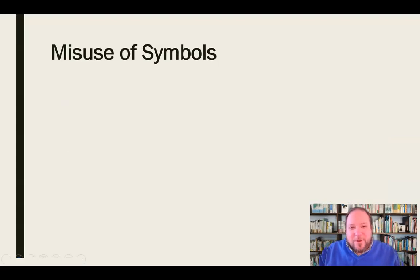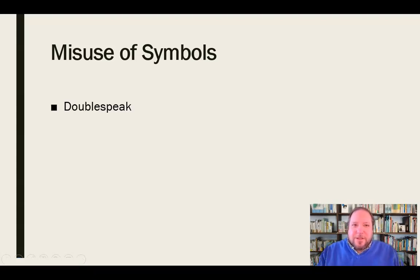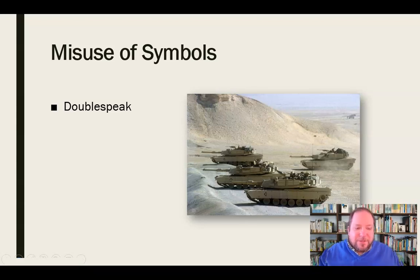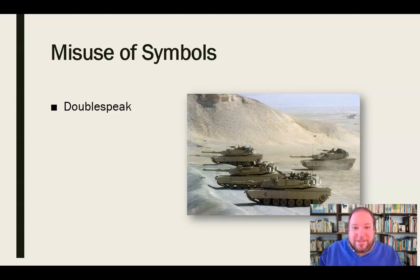We can also use symbols in not-so-great ways. We can misuse symbols in many ways, and this happens frequently. When we misuse symbols, we're using them to more manipulate than persuade. One example is doublespeak — using a term to cover the real meaning of something or to soften it, almost euphemistically. So when we see images of tanks, politicians don't want to say 'we need these war machines,' so they might call them 'instruments of peace' — this is how we keep the peace with other nations. That's some pretty good doublespeak, because these are machines of war, and calling them 'instruments of peace' is not really an accurate description. We need to be aware of and cautious about using doublespeak.